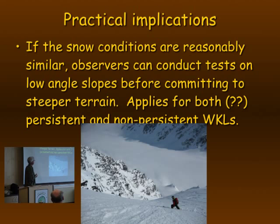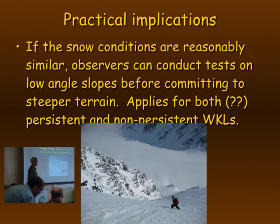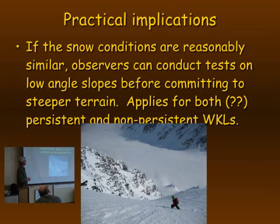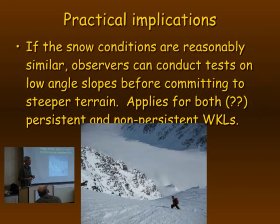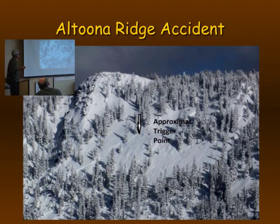The practical implication is: if snow conditions are reasonably similar, observers can conduct tests on low-angle slopes before committing to steeper terrain. The CT work is very preliminary — it's one data set — and we don't know yet whether it applies for both persistent and non-persistent weak layers. For the ECT, we've done work on both. Ron collected a couple of data sets in Alaska on non-persistent weak layers and we didn't see a slope angle effect there either.